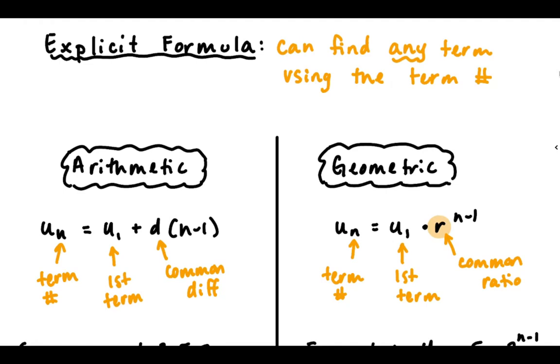Let me highlight these pieces: r, u_1, and n. So those are our explicit formulas, and we're going to do two things with them.